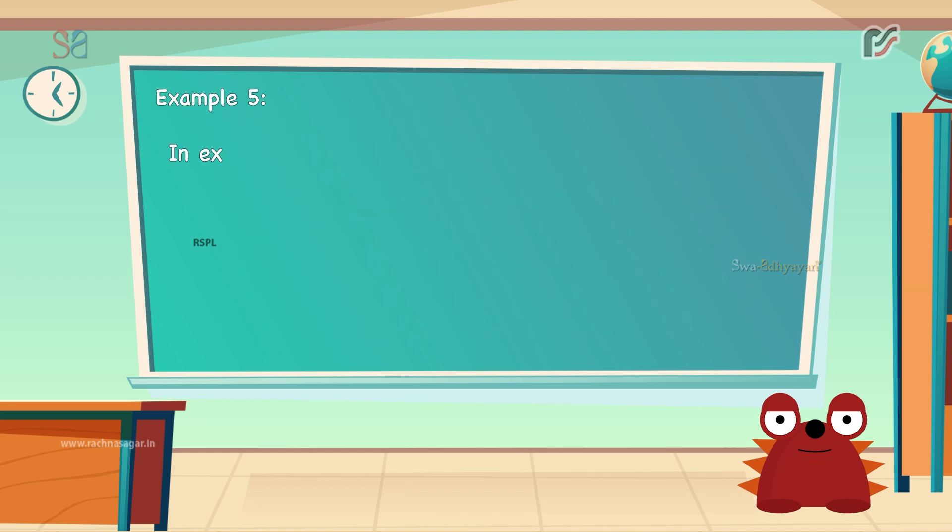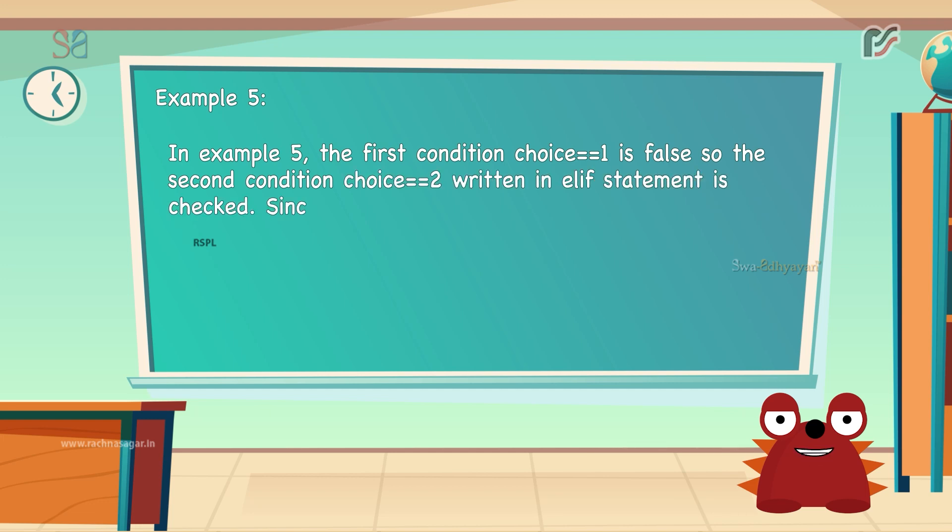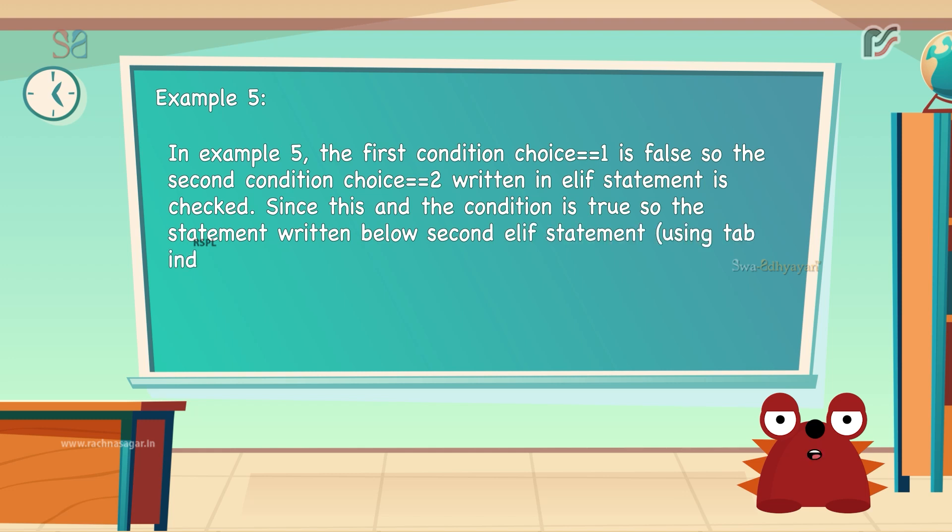Let us look at the example now. In this, the first condition choice is equal to one is false. So, the second condition choice is equal to two written in the elif statement is checked. Since this condition is true, the statement written below the second elif statement using tab indentation is executed and the output is printed on the screen.